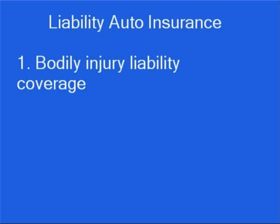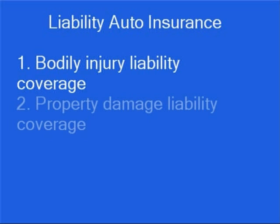Liability auto insurance provides you with two types of coverage: bodily injury liability coverage, which pays for medical expenses for the people you injure in an auto accident, and property damage liability coverage, which pays to repair or replace the other person's car and personal property you damage after an accident.